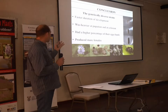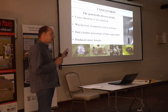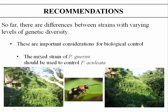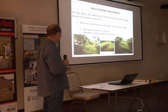In conclusion, we found that a more genetically diverse strain of Fenrica has produced a faster duration of development. They were also heavier at pupation and eclosion, had a higher percentage of eggs hatch, and produced more females. This is great for biological control because we want these insects to expand once released into the environment, and all of these factors will influence that. The recommendation from this study is that genetics does play a big part in the life history and biology of the insect, and especially in the case of Sparsecia culiata we should use the mixed strain because it performs better than the original.